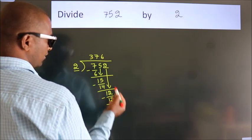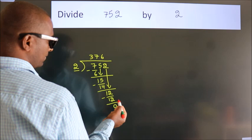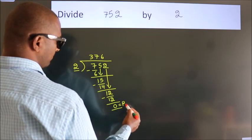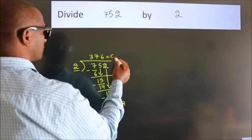After this, no more numbers to bring it down. So, we stop here. This is our remainder. This is our quotient.